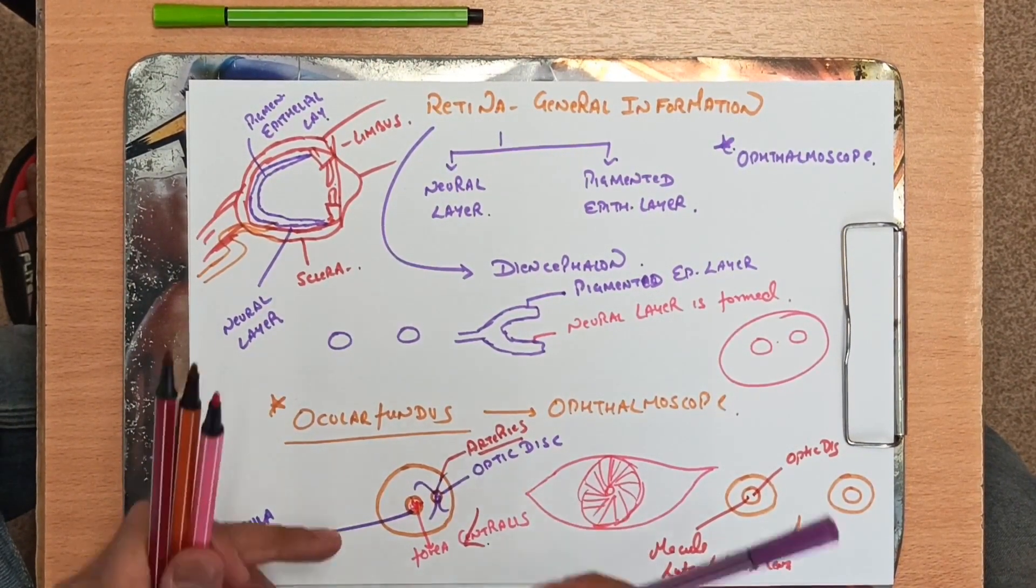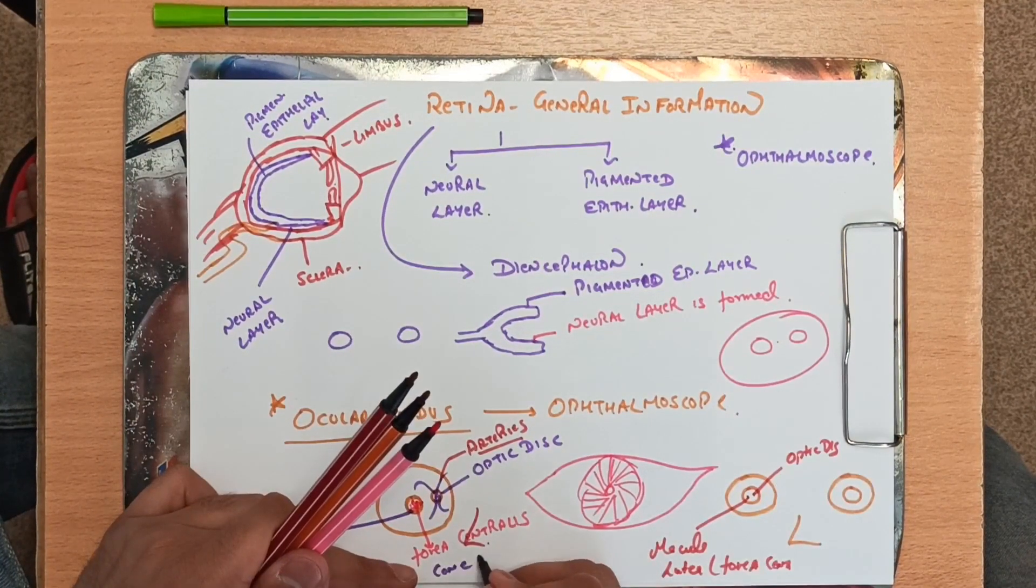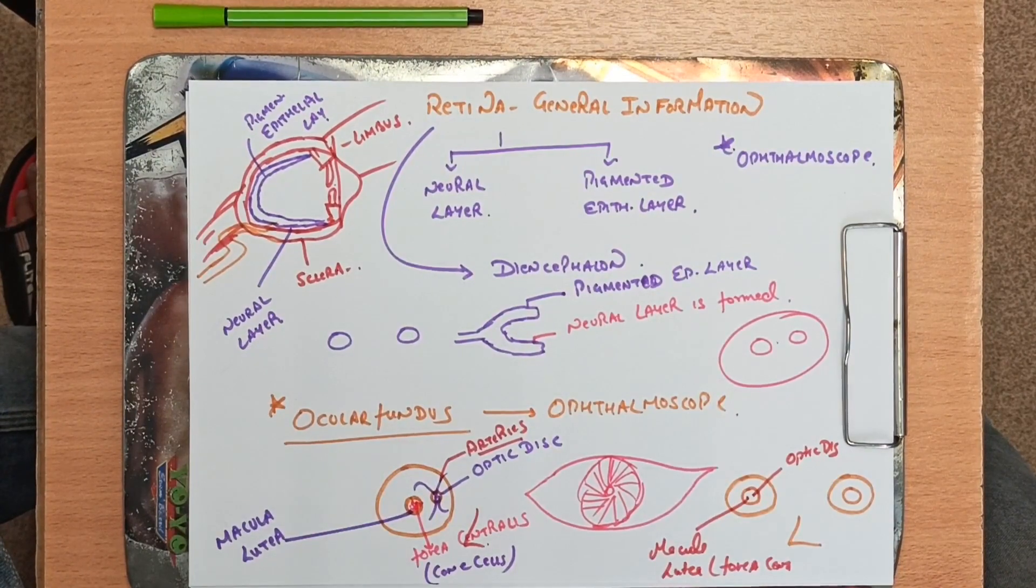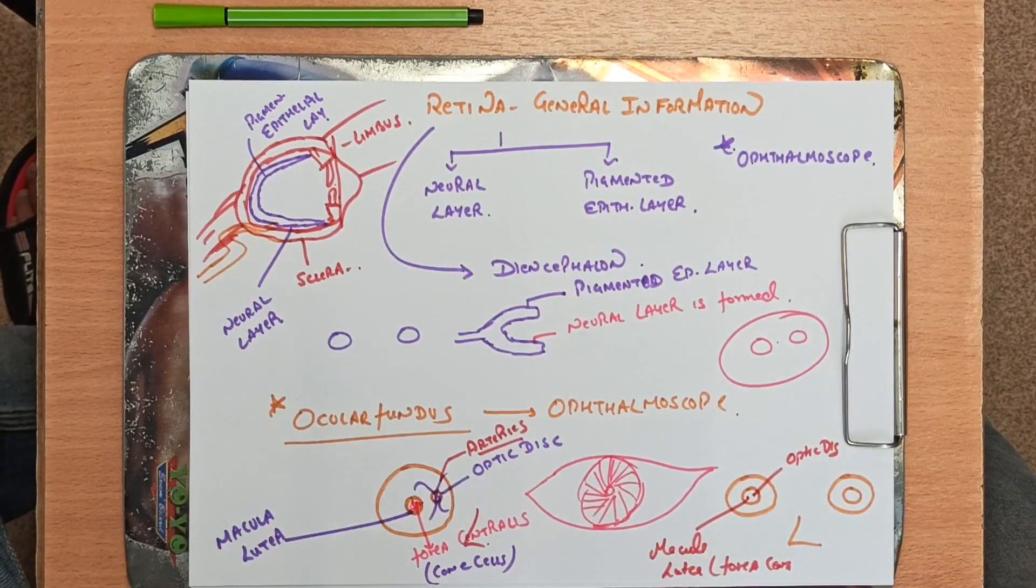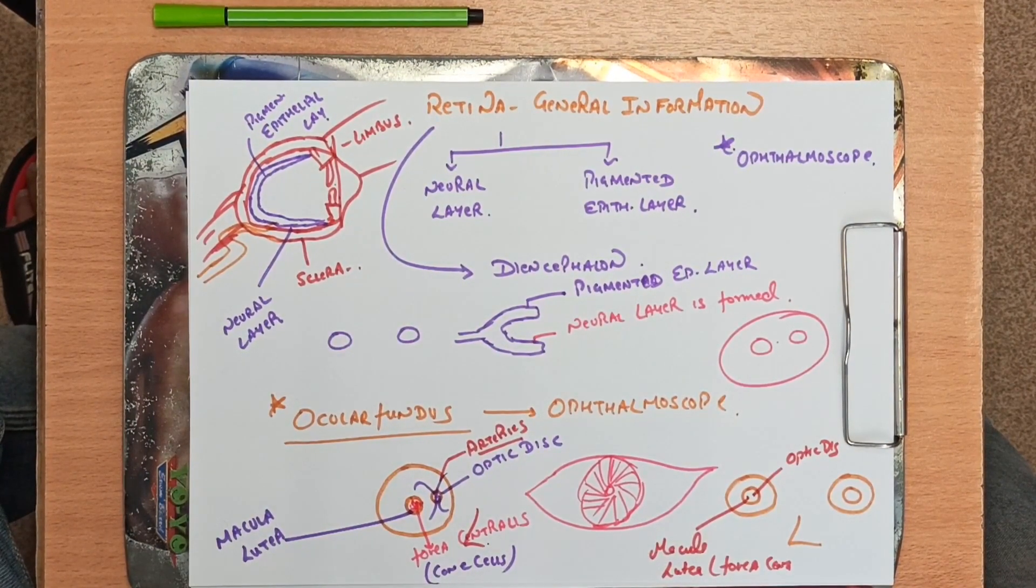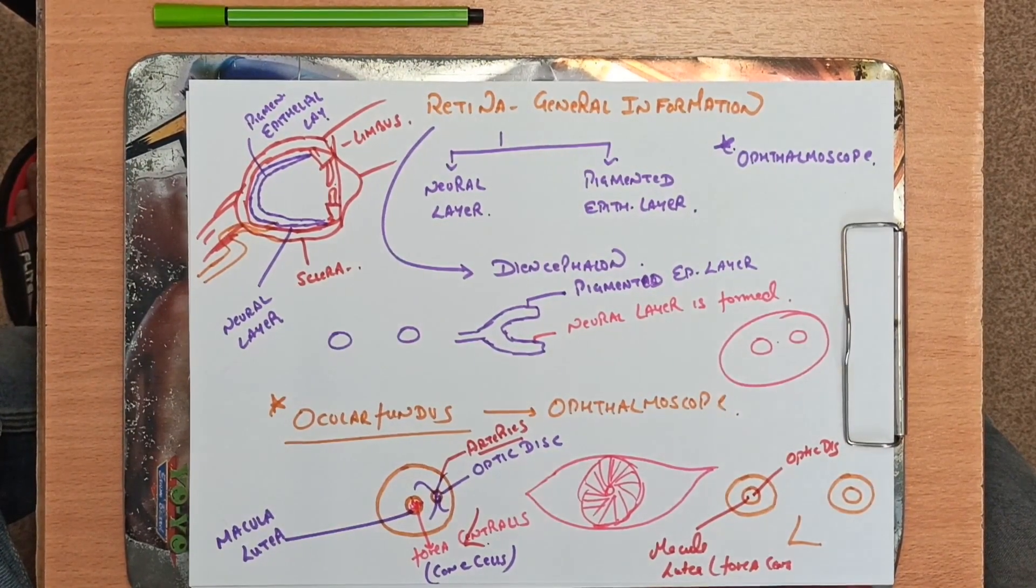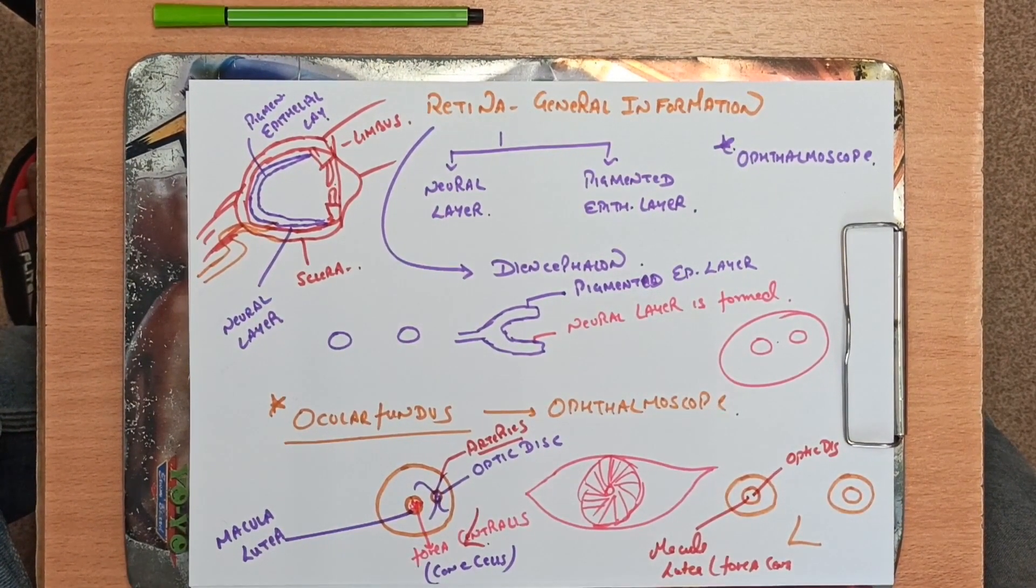In fovea centralis there are large number of cone cells. So guys this was a little bit general information about retina. In my next videos I'll be telling you about different types of layers and different types of diseases which can be caused due to malformation or due to any bacterial inflammation to the retina.